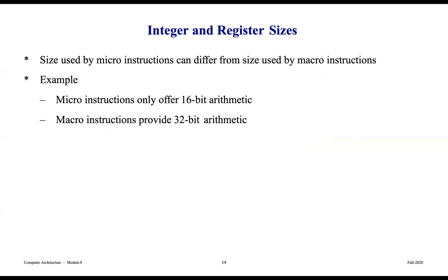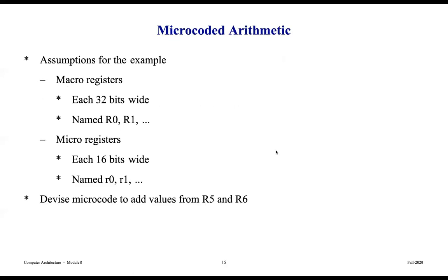The integer and register sizes used by a micro instruction set can differ from sizes used by a macro instruction. For example, a micro instruction set may only offer 16-bit arithmetic while a macro instruction set provides 32-bit arithmetic. So if we're going to do processing at the micro level and ultimately want a 32-bit operation, that's something we have to consider. The next couple of slides will walk through what that would look like.